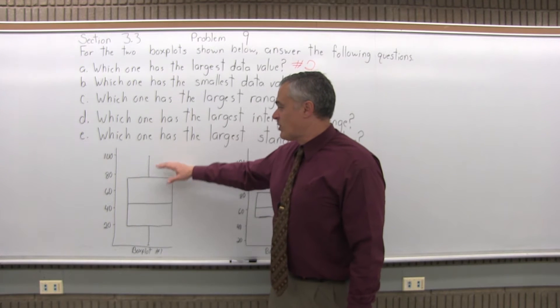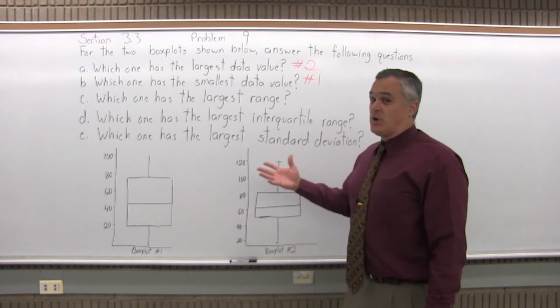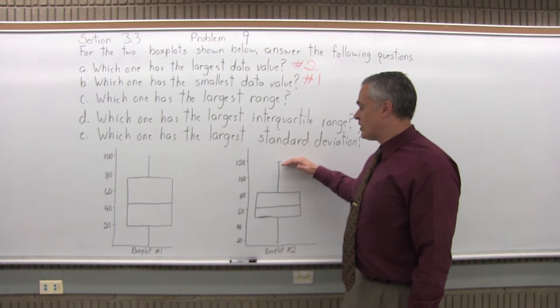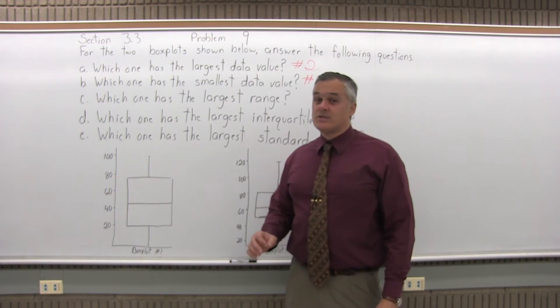Box plot number one goes from 100 to zero, about 100. Box plot number two goes from 120 to 20, about 100. So they're almost the same. But if you really look closely,